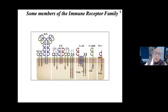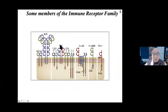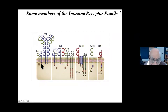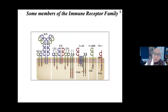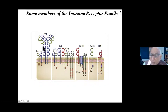Immune receptors are a family where all immune receptors have some chain or chains that bind something - like the antigen receptor on B cells or T cells - plus associated chains with tyrosine motifs called ITAMs. This kind of structure is the fundamental basis of an immune receptor. The signaling pathway downstream is very similar whether we think about the Fc epsilon receptor type 1 or the B cell receptor.